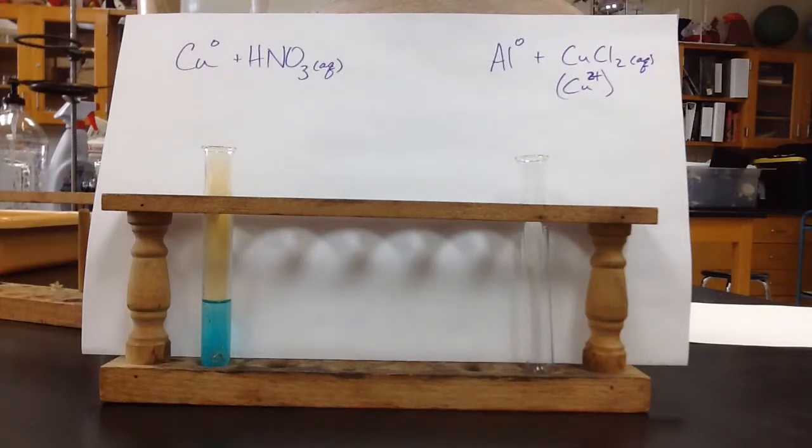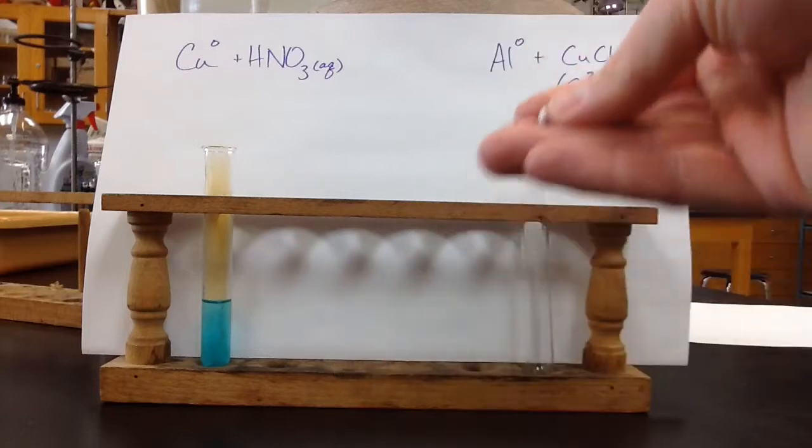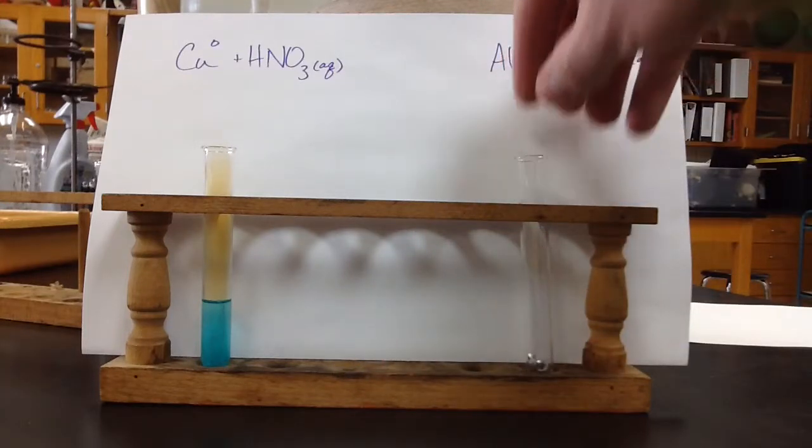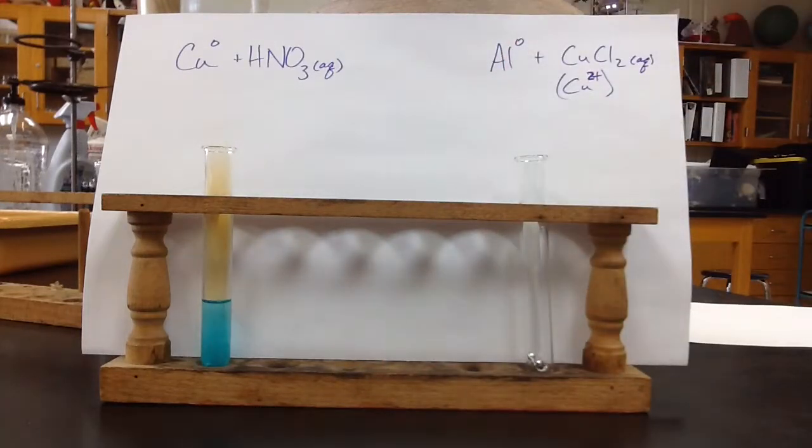While that's happening, we're going to go ahead and start the reaction of aluminum and copper chloride. Here's our piece of aluminum, and we're going to drop that in, and we're going to get our solution of copper chloride. It's a one molar solution, pretty strong as it comes for copper chloride.